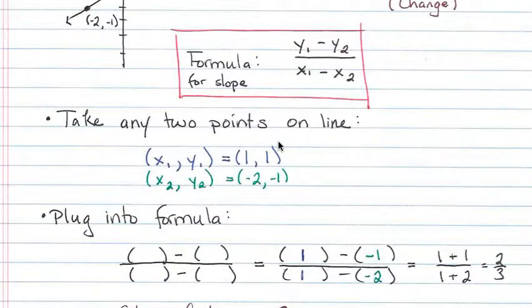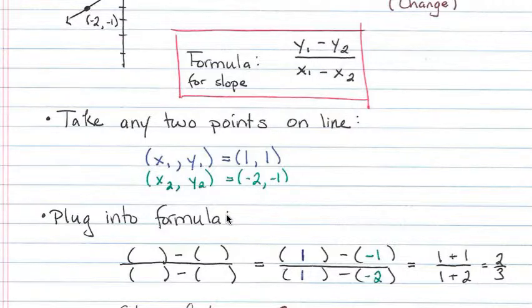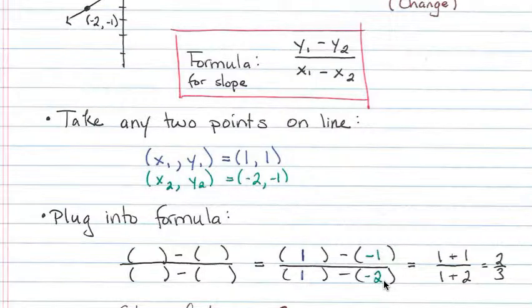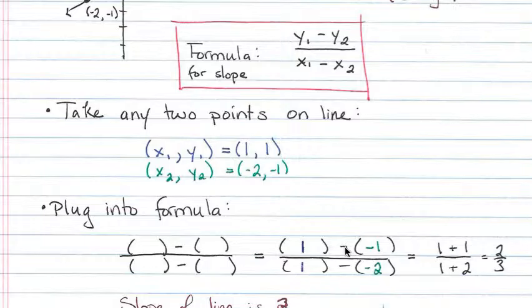So we plug it into the formula. Everywhere I had a letter in the formula, I just put a set of parentheses, and then I filled them in with numbers. This first set of parentheses should be y1 — what was our y1 value? It was 1, so I put a 1 there. Minus y2 — what was our y2? That was negative 1, so I plugged in negative 1. Our x1 value came from our first point, which was 1. x2 was negative 2. Notice it was very important that I put the negative inside the parentheses because if you have minus a negative, that creates a positive on both the top and the bottom.